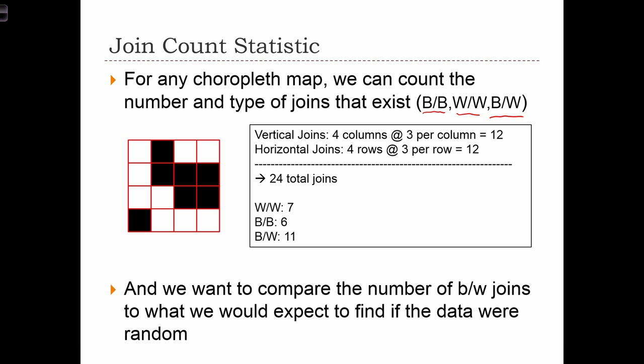And what we are going to do is count the number of joins that exist. So first of all, in this map over here, let's count the total number of joins. So we can start by counting the vertical joins. We are going to have 1, 2, 3, 4, 5, 6, 7, 8, 9, 10, 11, 12 vertical joins.